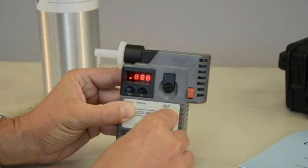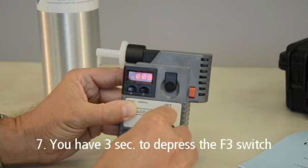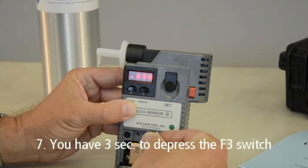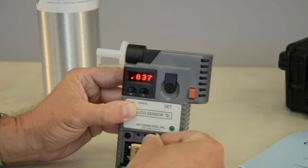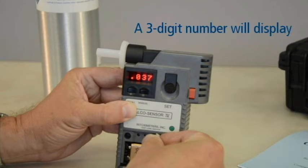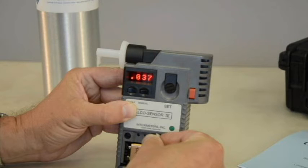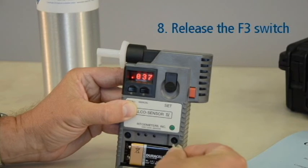As soon as the air blank result displays, you will have 3 seconds to depress the F3 switch, or the calibration procedure will be cancelled. Once the F3 switch has been depressed, a 3-digit number will display. This number is the value of the gas standard used from the last calibration performed. Release the F3 switch.